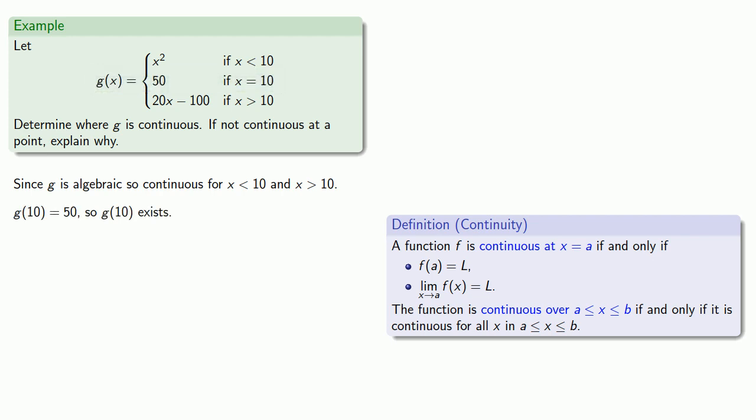Because our rule changes at x equals 10, we'll have to approach from both sides. As x approaches 10 from below, our function is x squared and our limit is going to be 100. As x approaches 10 from above, our function is 20x minus 100 and our limit is 100. And since the limits agree, we can say the limit is 100.